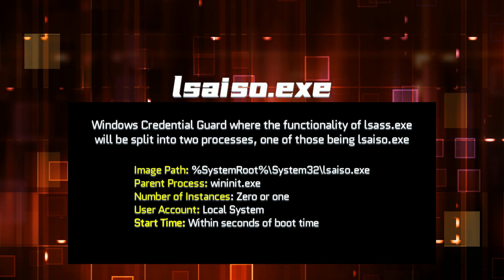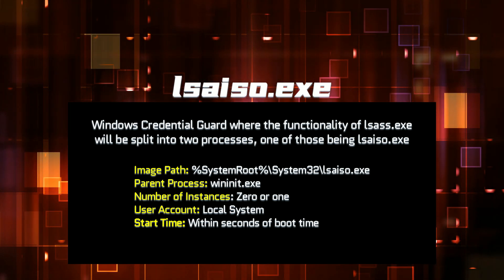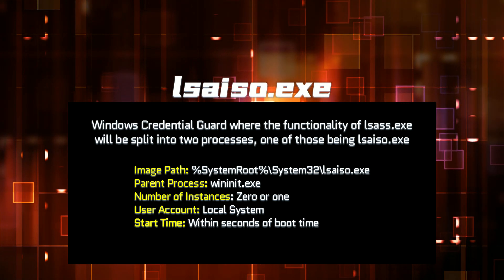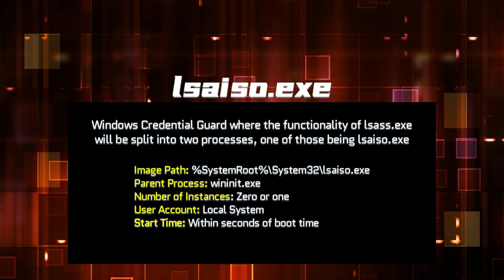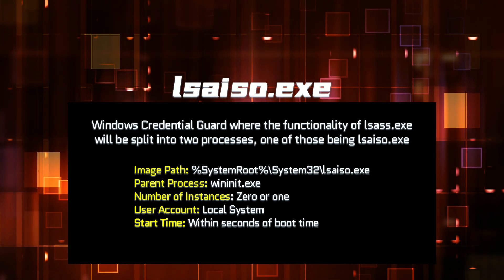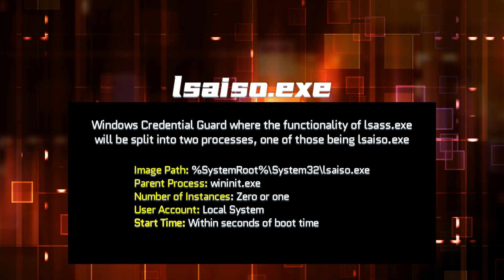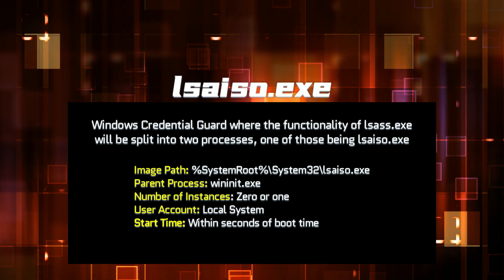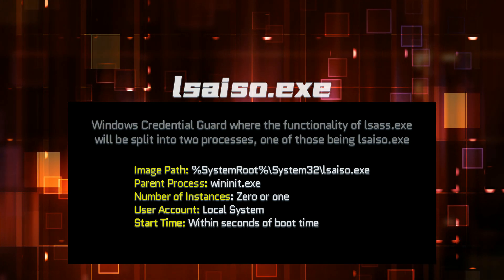lsaiso.exe is related to Windows Credential Guard, where the functionality of lsass.exe will be split into two processes, one of those being lsaiso.exe. Though most of the functionality remains with lsass.exe, lsaiso.exe's purpose is to safely store account credentials. It provides safe storage and will be separate from other processes through hardware virtualization technology. It's important to remember that if Credential Guard isn't enabled, lsaiso.exe shouldn't be running. The image path should show it's coming from System32 with a parent process of wininit.exe. There should only be one instance, if any, and the user account should be Local System, starting within seconds of boot time.